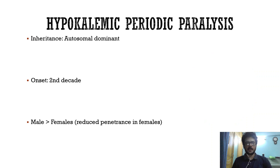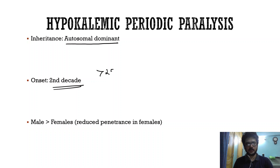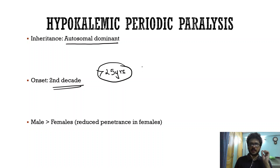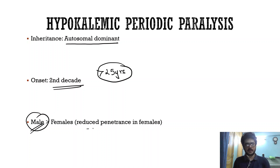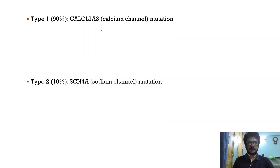Hypokalemic periodic paralysis has autosomal dominant inheritance and onset is usually in the second decade. Any hypokalemic paralysis occurring after 25 years of age is very unlikely to be hypokalemic periodic paralysis. An exception is thyrotoxic periodic paralysis, which can occur at any time. Males are much more likely to be affected than females because of reduced penetrance in female patients.